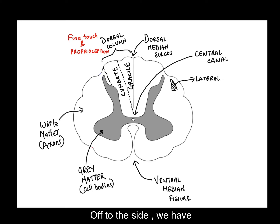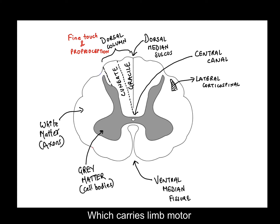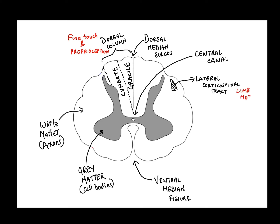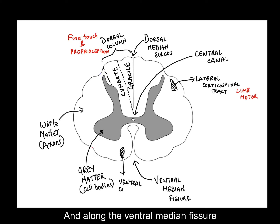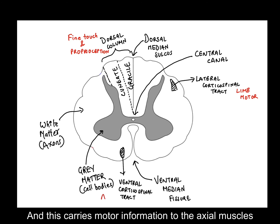To the side we have the lateral corticospinal tract, which carries limb motor or limb movement information. Along the ventral median fissure we have the ventral corticospinal tract, and this carries motor information to the axial muscles.